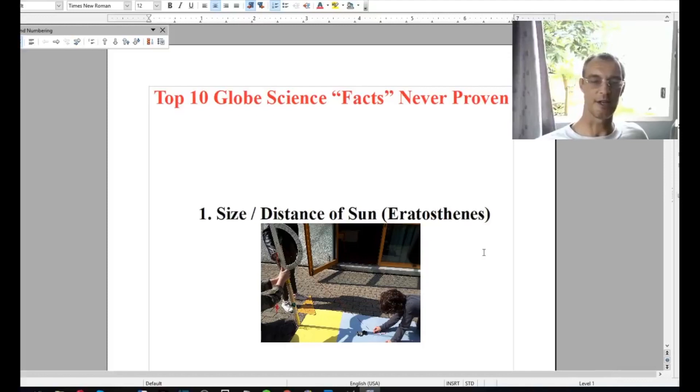So, there's nothing that's ever been really done to prove the idea that the sun is 93 million miles away and that it is many, many more times larger than the Earth. So, it isn't a scientific fact that Eratosthenes ever discovered the shape of the Earth, the size of the Earth, or the sun, or the distance to the sun.